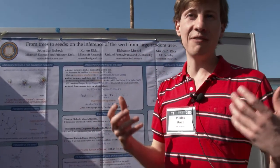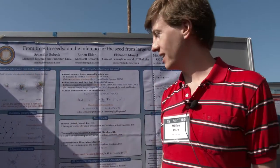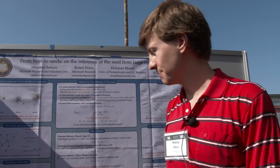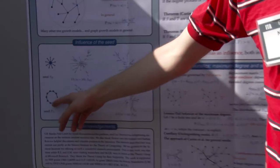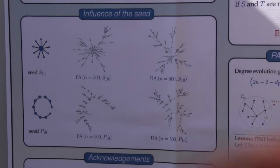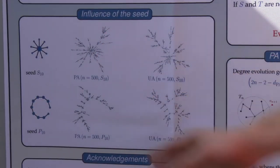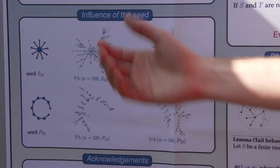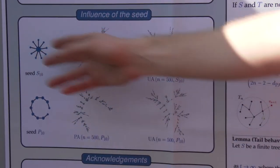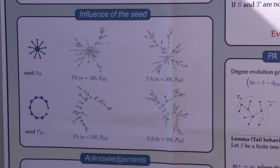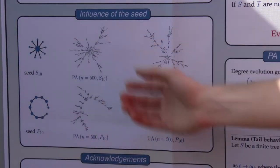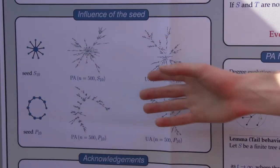And the question is, does this have an influence on how the graph looks at large times? So here you can start from a star or you can also start from a path. And you can see realizations of the preferential attachment process and the uniform attachment process with 500 nodes. You can see these kind of have a star shape, these kind of have a path shape. So you can see remnants of the initial seeds in these larger trees.